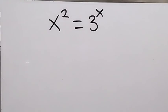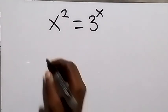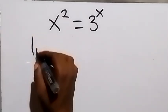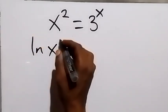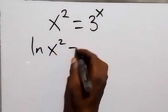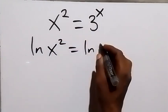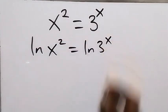Hello, you are welcome. How to solve this problem: x squared equals 3 raised to the power x. Let's take the ln on both sides. We have ln of x squared equals ln of 3 raised to the power x.